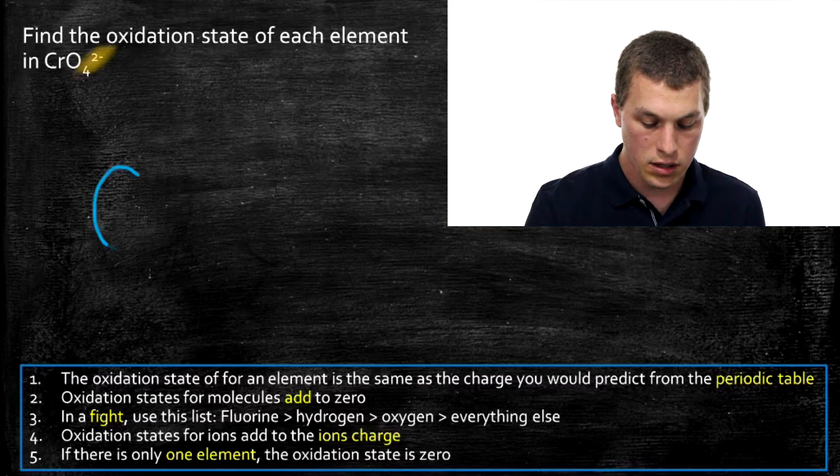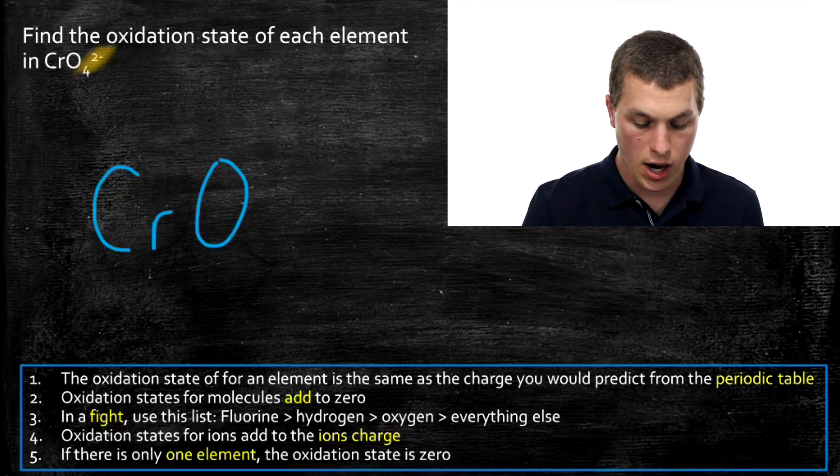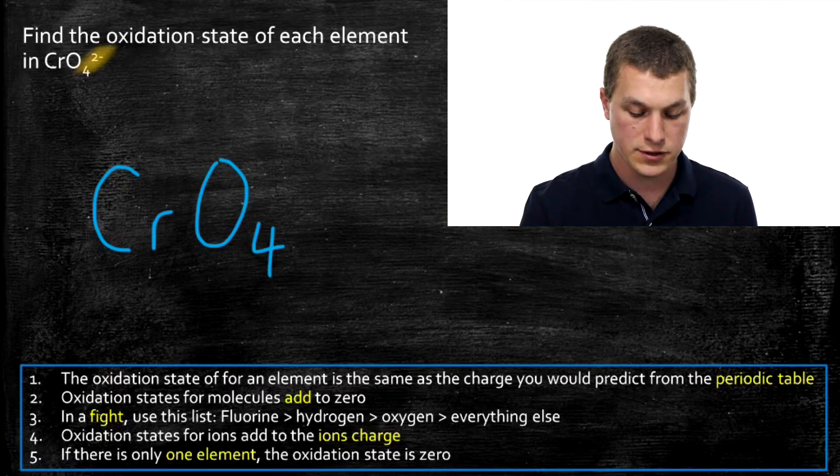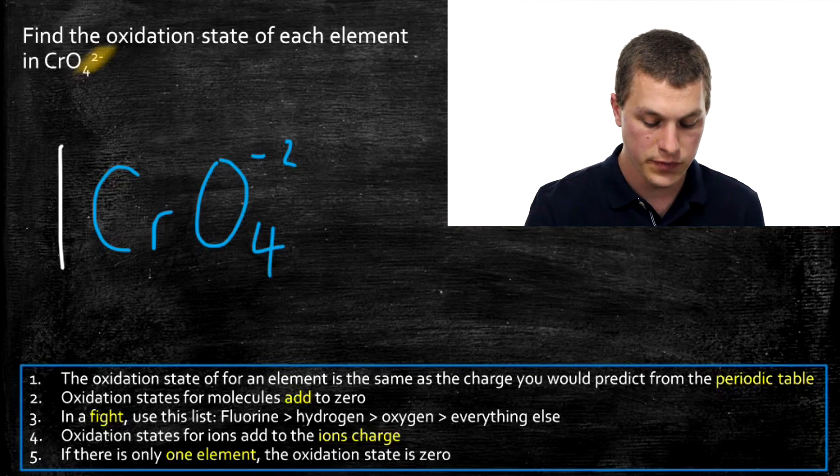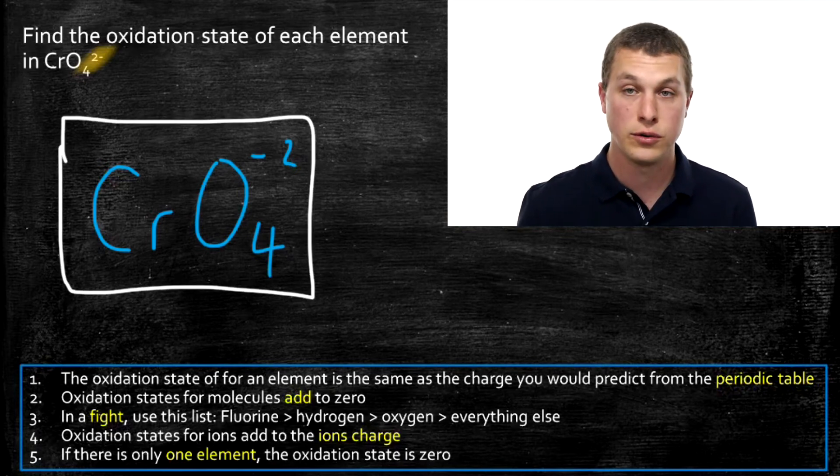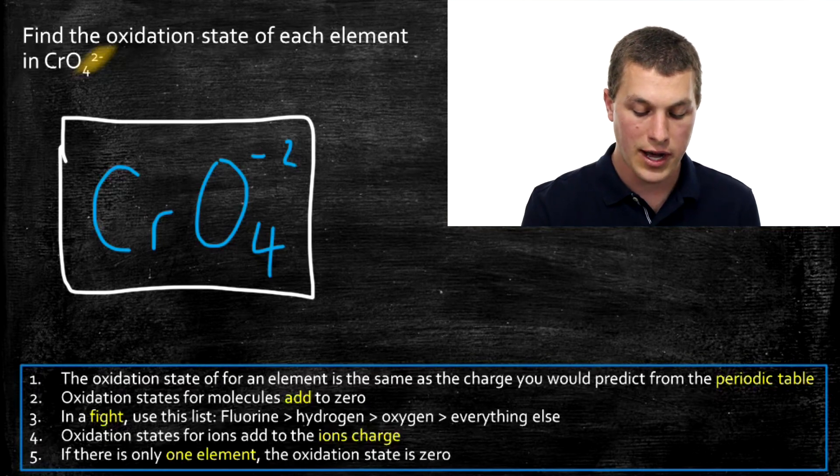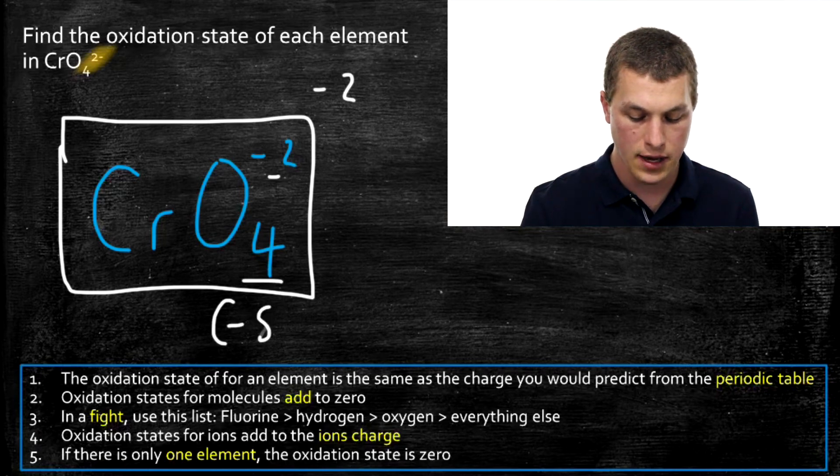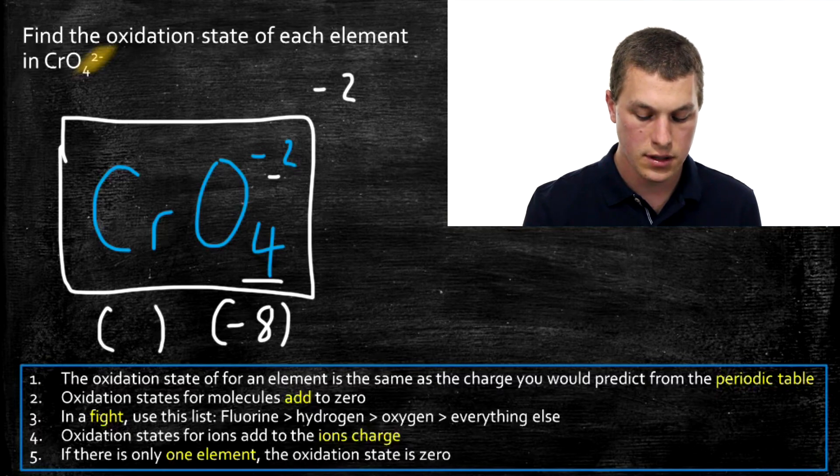Once again, we can predict the charge of oxygen from the periodic table. You can't predict the charge of chromium from the periodic table. So the oxidation state of oxygen is minus two, which is how you start many of these oxidation state problems. All of those different elements are going to add up to a total oxidation state of negative two. We have four oxygens, each at negative two. That gives us a total negative oxidation state of minus eight.